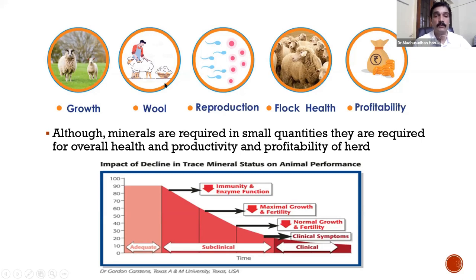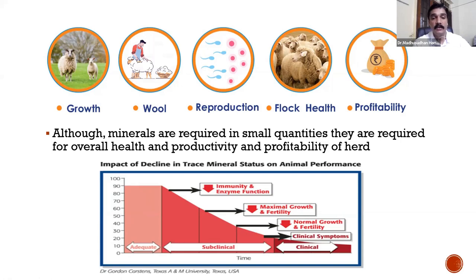Minerals are required for growth, wool production, and reproduction. Some minerals are required for overall health and immunity of sheep and goat, and if productivity — wool, meat production, or lambing rate — is improved, it leads to profitability. When adequate minerals are present in the body, immunity, enzyme functions, growth, and fertility are normal. But at subclinical levels, immunity, enzyme function, growth, and fertility decrease as the mineral level is reduced. Clinical symptoms appear at even lower levels, which can be detected through blood or tissue analysis or post-mortem diagnosis.